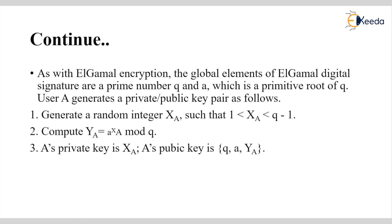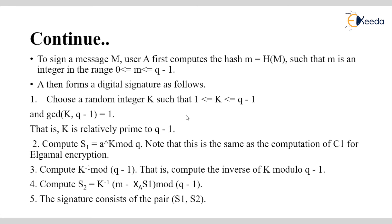The global elements of the ElGamal digital signature scheme are the prime numbers q and a, where a is a primitive root of q — this is the finite Galois field. User A generates a private key xa and a public key ya. The private key is xa, and the public key consists of three parameters: q, a, and ya.